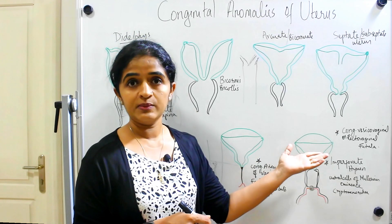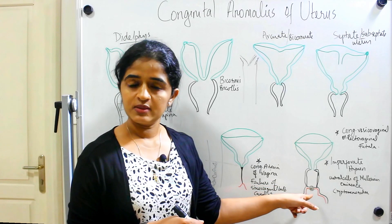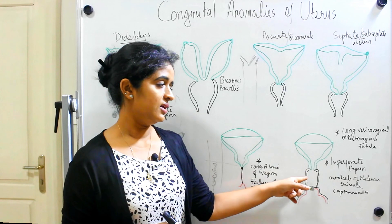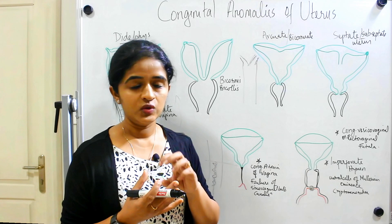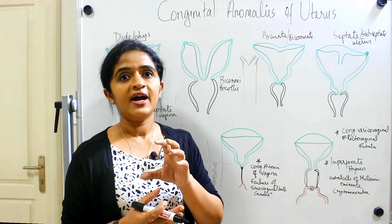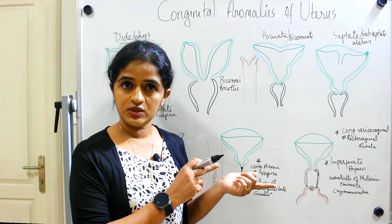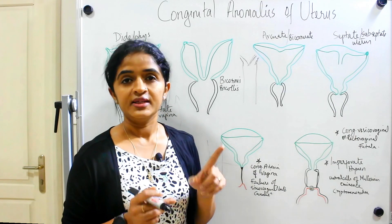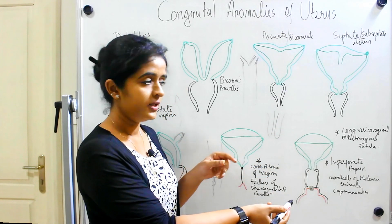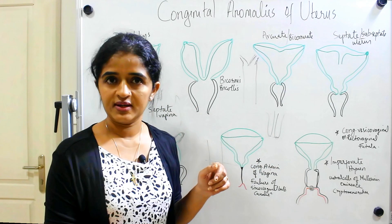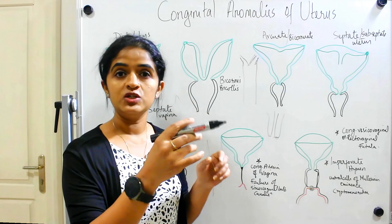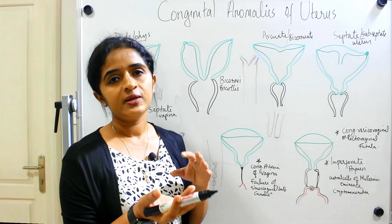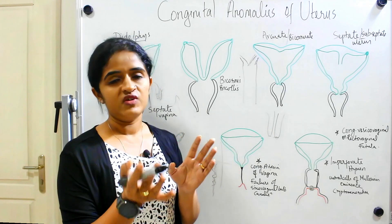Another important condition: the Mullerian tubercle opens into the urogenital sinus on the dorsal aspect of its posterior wall. If the caudal end of the paramesonephric duct instead goes anteriorly and opens into the bladder (vesical region), there will be a fistula between the vagina and the bladder — that is congenital vesico-vaginal fistula. The lower vagina will be communicating with the bladder.